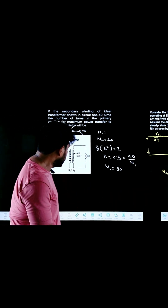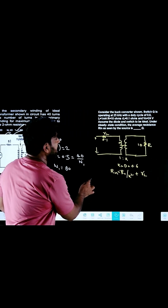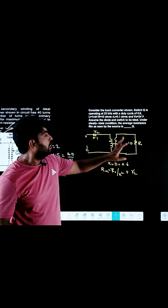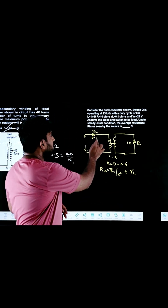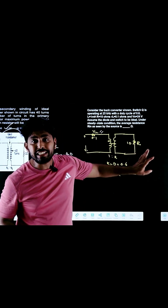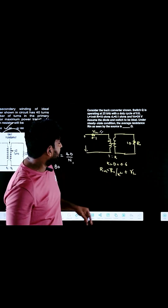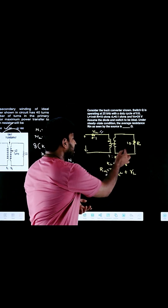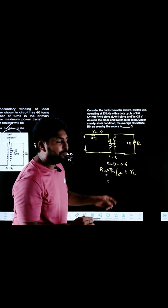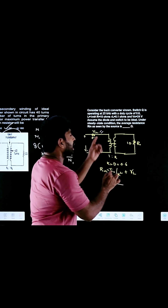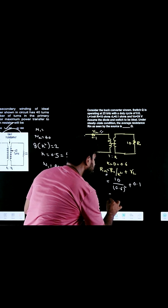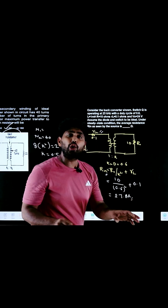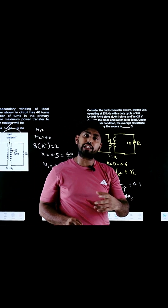Similarly, let us apply the same concept to the DC-to-DC converter. This is a buck converter with inductive resistance RL given and R0 = 10 ohms. To find the input resistance: R_in = R0/k² + RL = 10/(0.6)² + 0.1 = 27.8 ohms. Similarly, you can find the input resistance for a boost converter as well as a buck-boost converter.